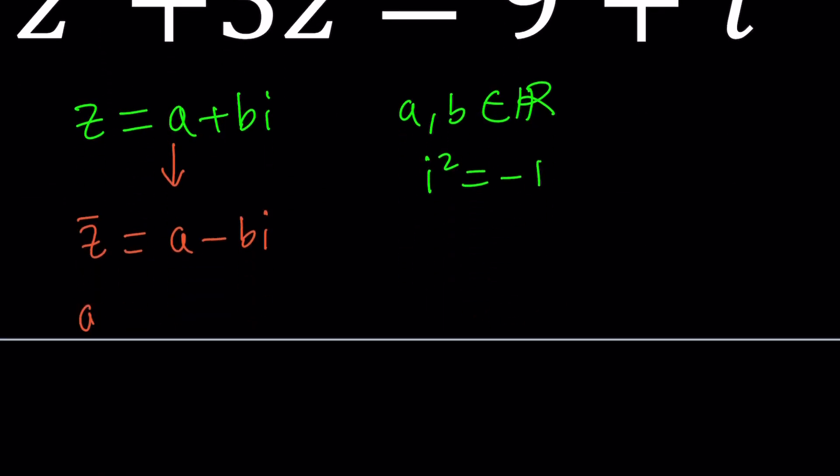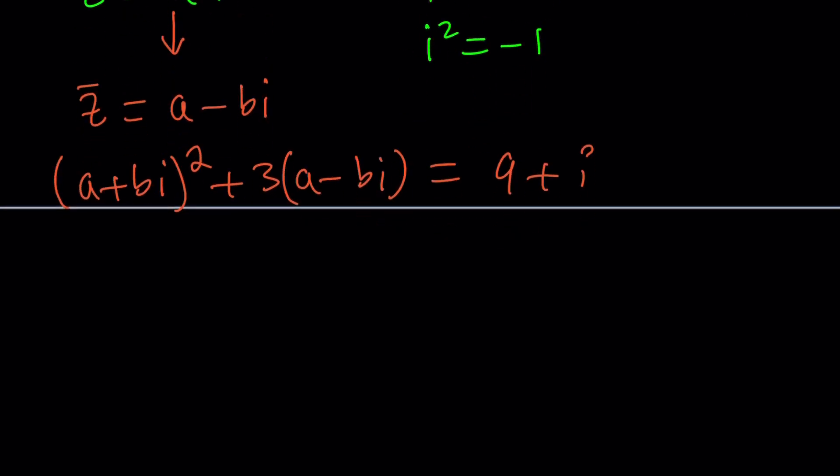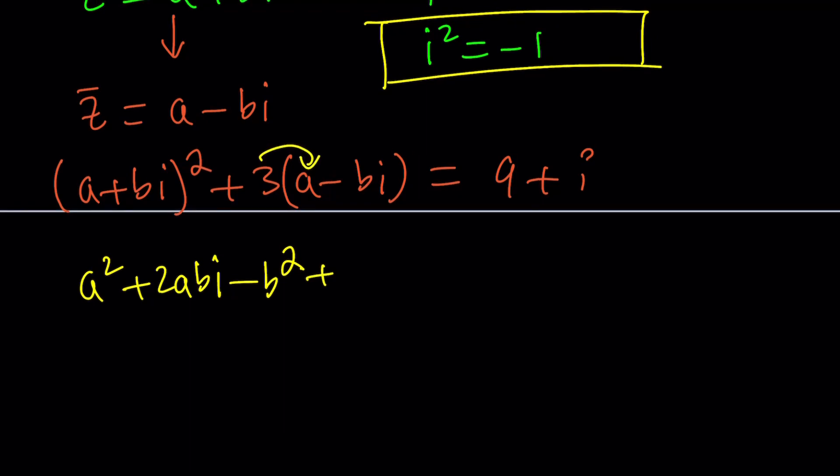Replace Z with A plus B I and Z bar with A minus B I and set it equal to 9 plus I. We're going to expand this. It's going to become A squared plus 2 A B I plus B squared I squared but remember I squared is always negative 1 so this is going to be minus B squared. Plus 3 A minus 3 B I and that equals 9 plus I.